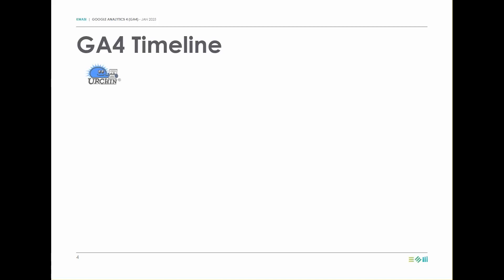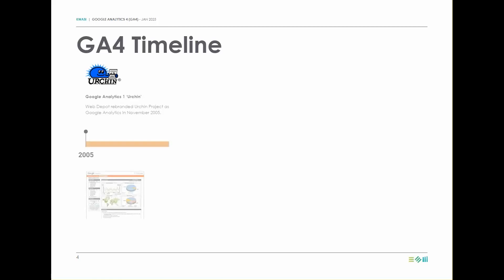It all dates back to 1997 when Urchin Project was founded by a small company called Web Depot, who specialized in business development and web hosting. After attending a trade show in 2004, Web Depot networked with Google and agreed to rebrand Urchin as Google Analytics in November 2005. Hence, GA1 was launched.